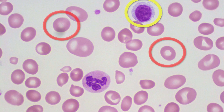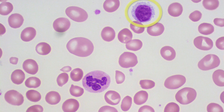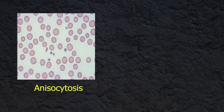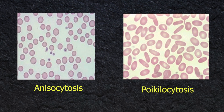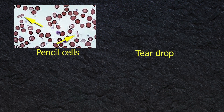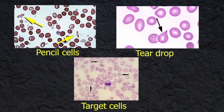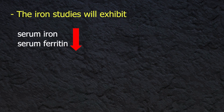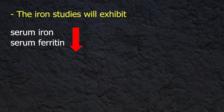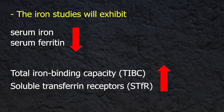If the erythrocytes are smaller than small lymphocytes, they are called microcytic. Other features evident in the blood picture are anisocytosis and poikilocytosis, which will be evident by the presence of pencil cells, teardrop cells, and target cells. Iron studies will exhibit low serum iron, low ferritin, and increased total iron-binding capacity and soluble transferrin receptor levels.